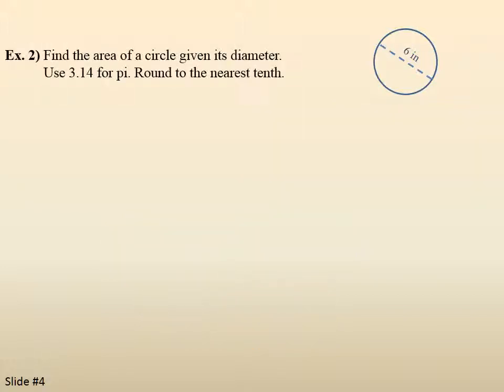Example 2, find the area of a circle given its diameter. Use 3.14 for pi. Round to the nearest tenths. So you can see we've got a circle. The diameter is shown as 6 inches. Step 1, write the general formula. Area equals pi r squared.